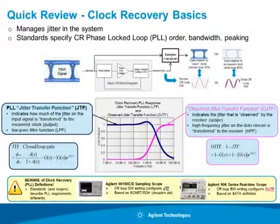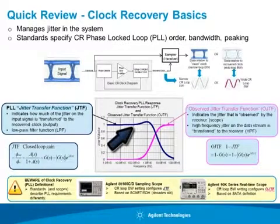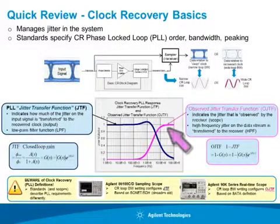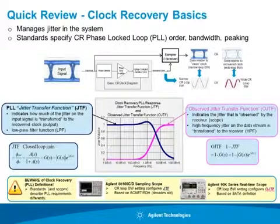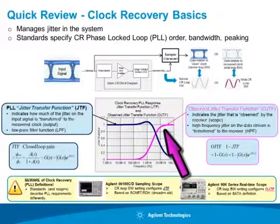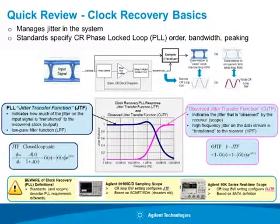It's really important that you know, when working with a particular standard, whether the standard is talking about the 3 dB bandwidth of the low-pass function — the jitter transfer function — or whether it's the 3 dB bandwidth of the high-pass function, which we are calling the OJTF. The DCA's hardware clock recovery sets the loop bandwidth of the low-pass JTF function. Some newer standards such as SATA and SAS, and some oscilloscopes such as the Agilent real-time oscilloscopes, define the loop bandwidth in terms of the OJTF. So for accurate, apples-to-apples measurements, you really need to know whether you're setting up the JTF or the observed JTF.